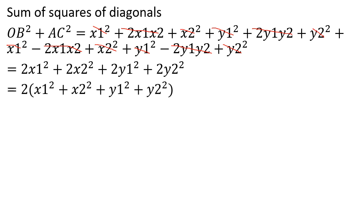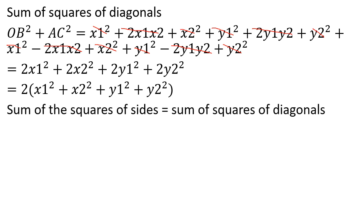Now what we should do is look at this side. The same value is on the inside — the sum of squares of all sides equals the sum of squares of the diagonals.